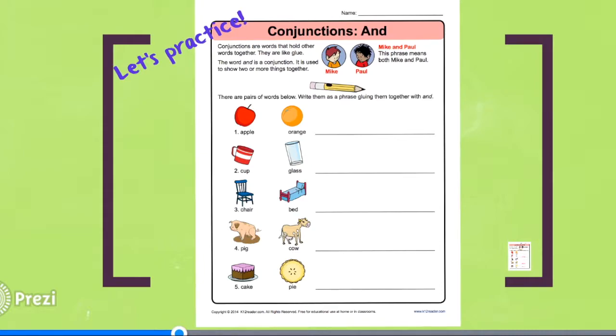Now let's practice more with the and conjunction with this worksheet. This worksheet has two subjects in which you are going to glue them together with the conjunction and. Our first example has two subjects, Mike, Paul. You are going to glue and in the middle to say, Mike and Paul. So I'm going to give you a moment to complete this worksheet and you will see how you did shortly.